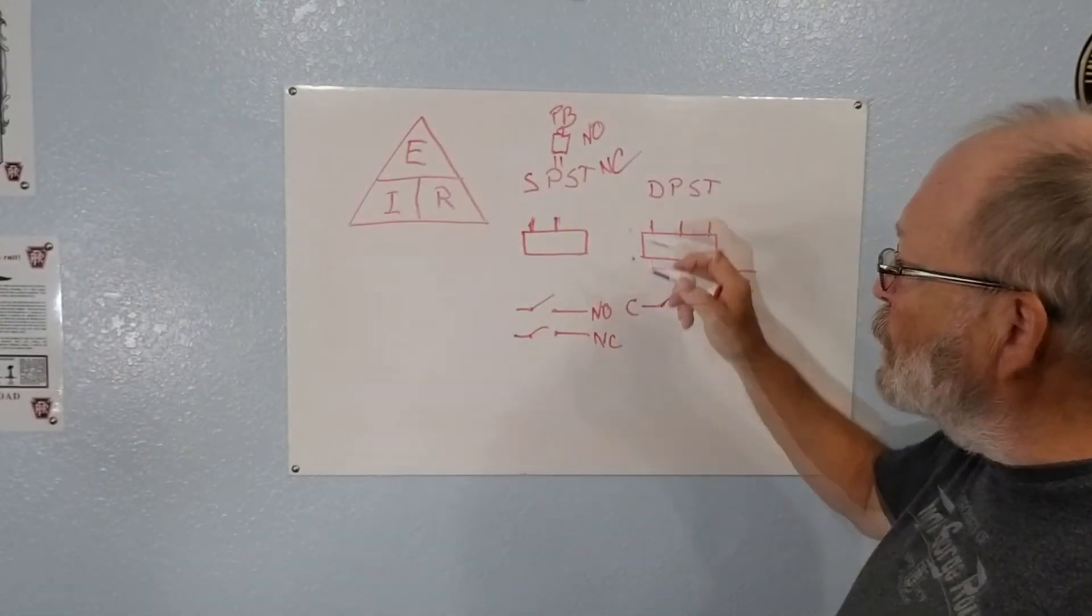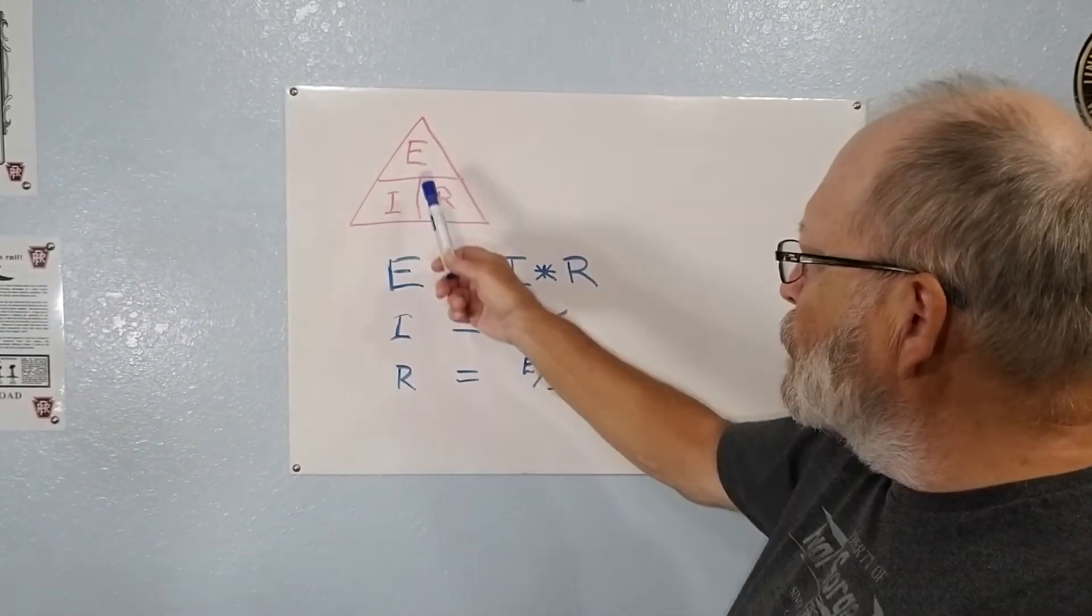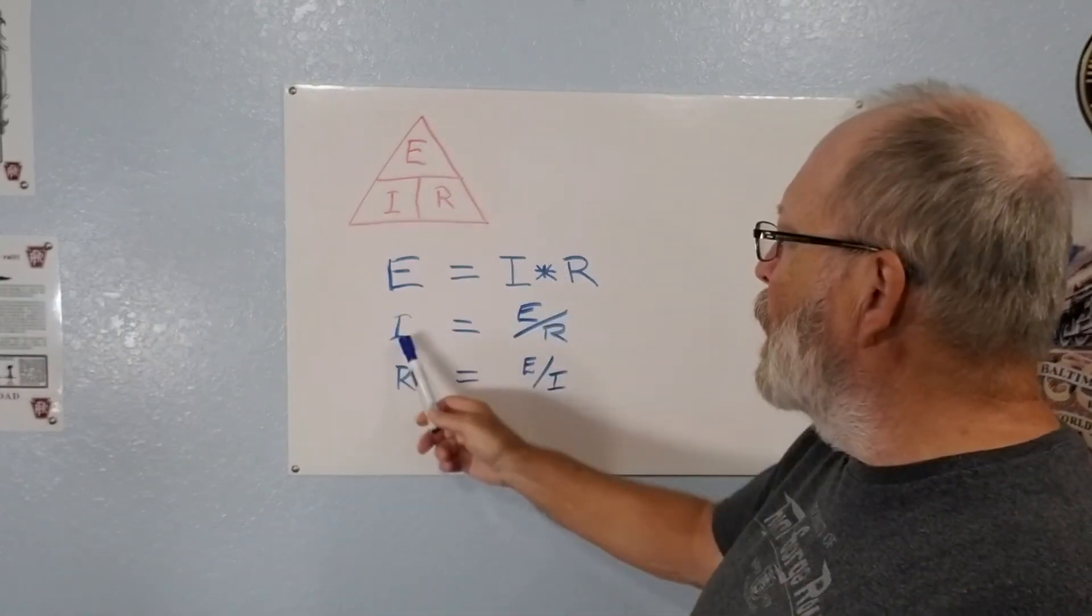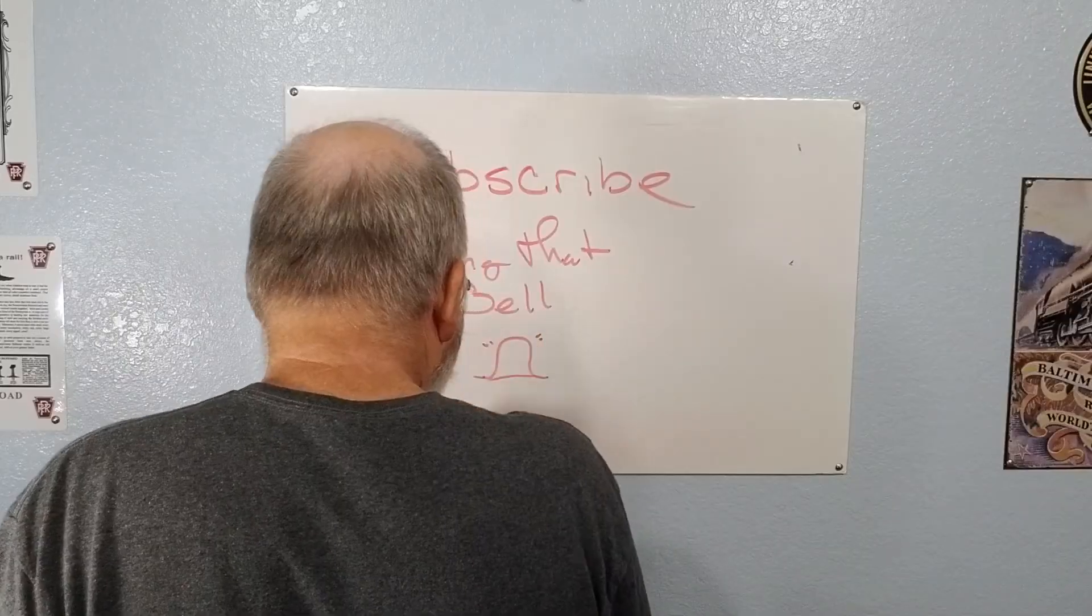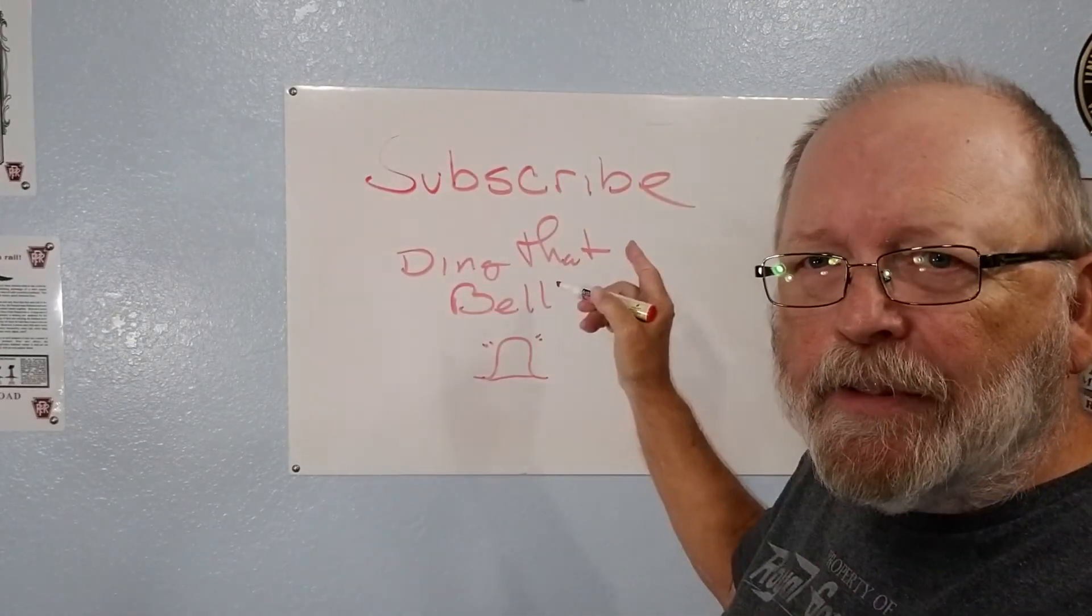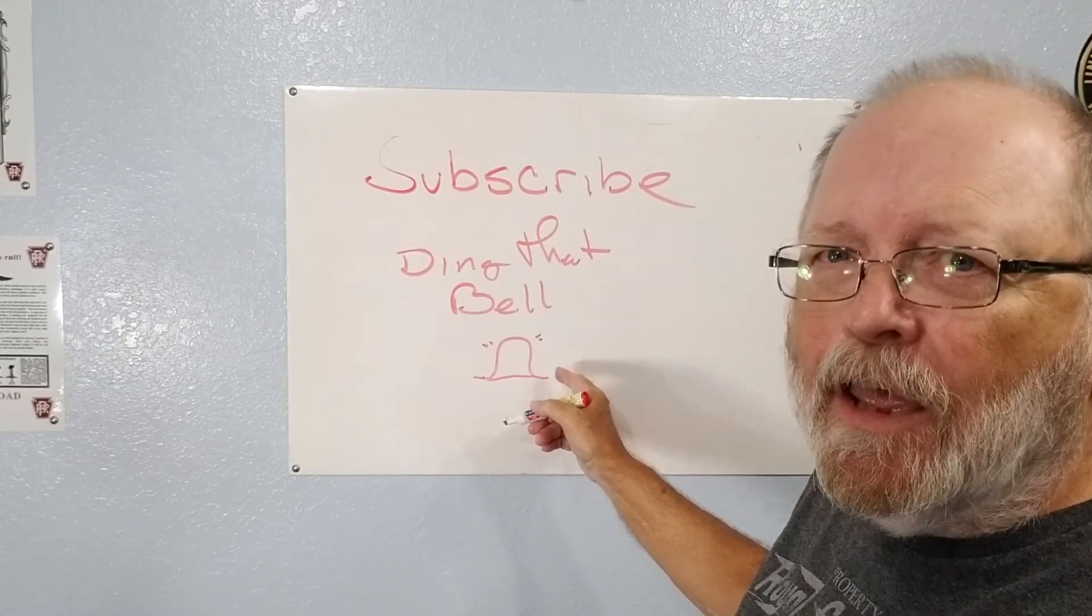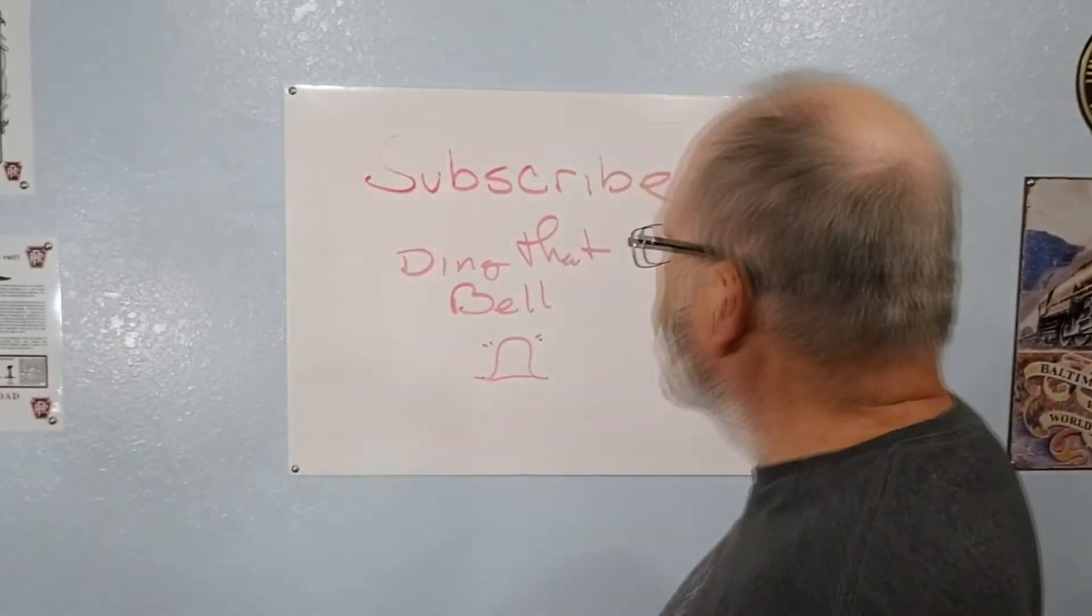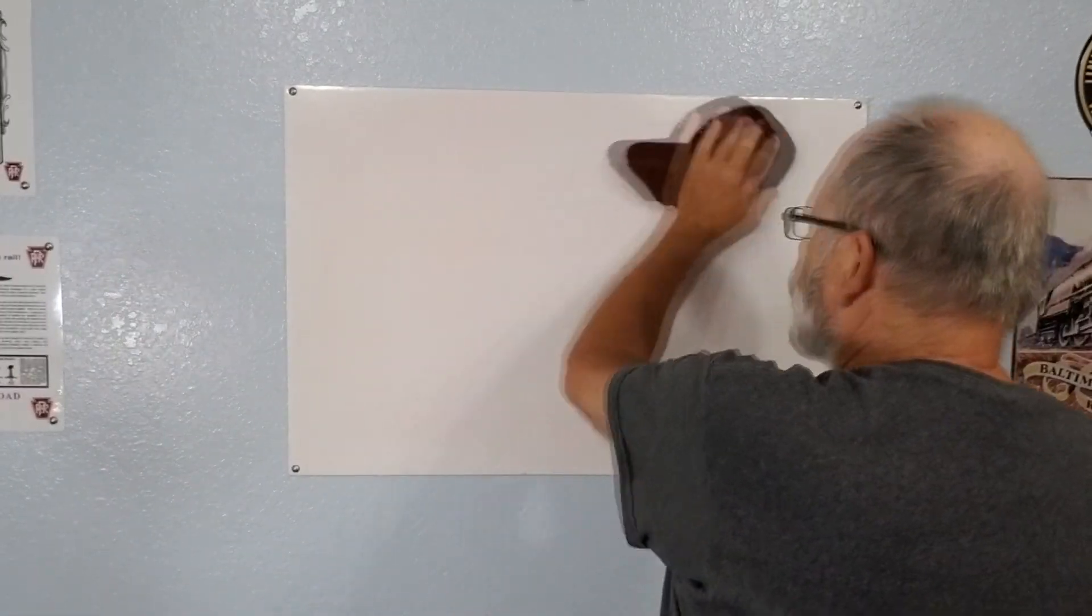There's just a little review of Ohm's law here. Here's a little pyramid with it. E equals I times R, I equals E over R and R equals E over I. Don't forget to subscribe and ding that bell, that's a sorry looking bell right there but you get the idea, so you could be notified whenever I have a new video coming out. And like I said I'll have one on the meter and I'll have more videos coming out on principles of electrical on your model railroad so take a look for it.